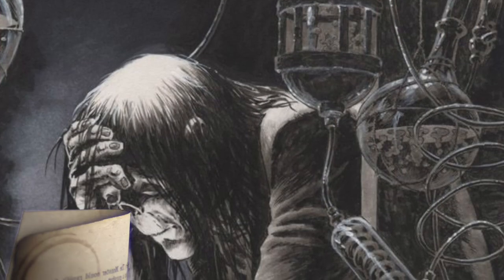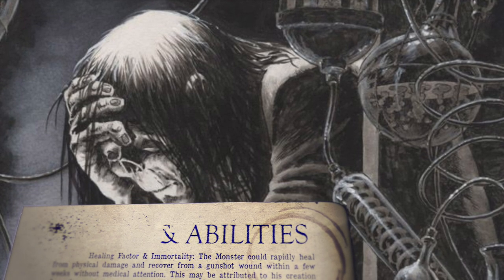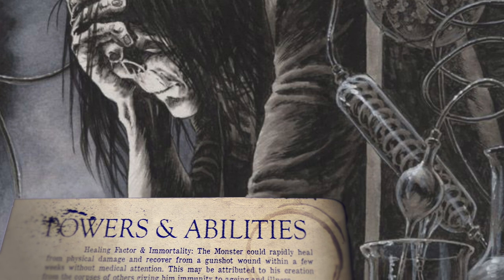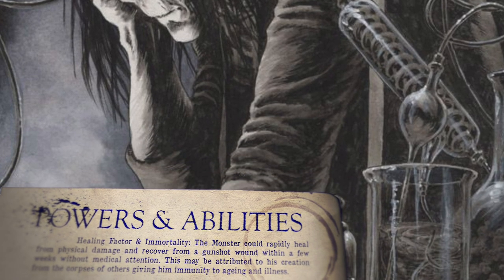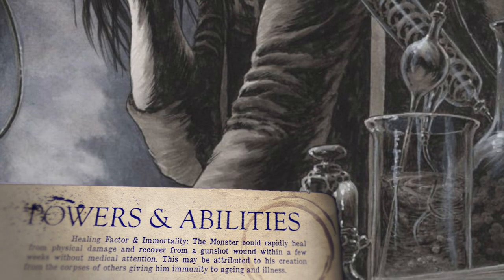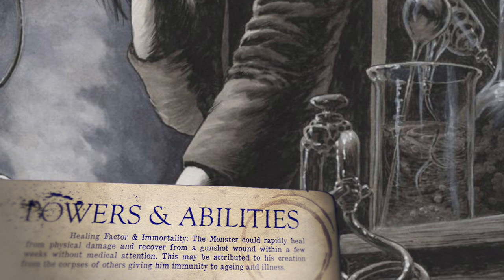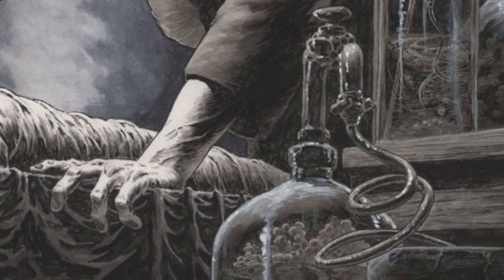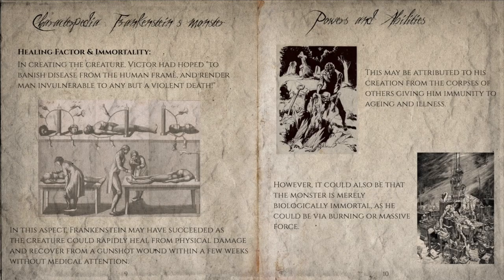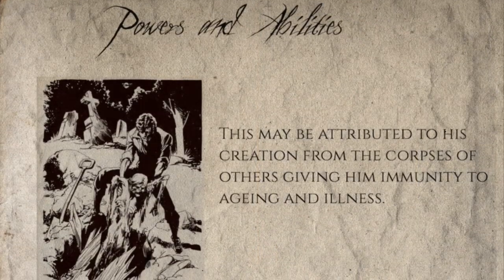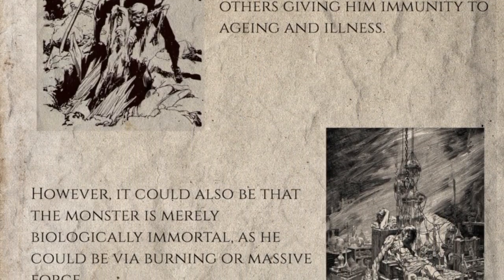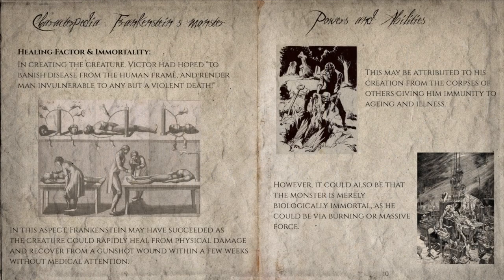In creating the creature, Victor had hoped to banish disease from the human frame and render man invulnerable to any but a violent death. In this aspect, Frankenstein may have succeeded, as the creature could rapidly heal from physical damage and recover from a gunshot wound within a few weeks without medical attention. This may be attributed to his creation from the corpses of others, giving him immunity to aging and illness. However, it could also be that the monster is merely biologically immortal, as he could be destroyed via burning or massive force.